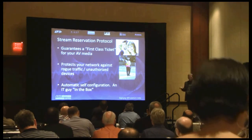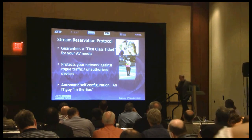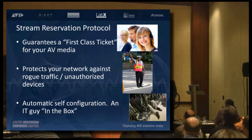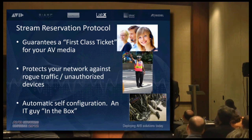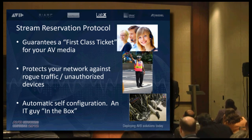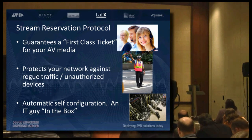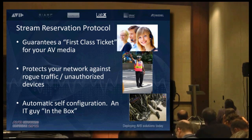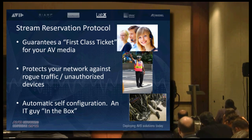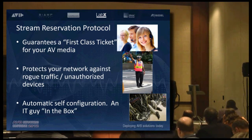AVB will see that legacy traffic and say: that's fine, you can do that, but you're not going to influence the reservations I have for my data. And this all happens automatically. Unlike QoS, which is just a strong recommendation that you have to go in and manually configure, this is happening automatically. These are active participants — a talker and a listener that want to start communicating go and talk to all of the bridges involved and lock down and guarantee that bandwidth automatically.